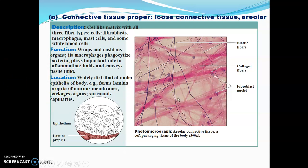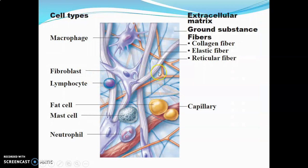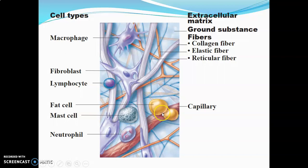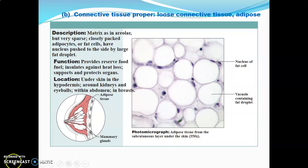Areolar connective tissue is found in four key areas: the lamina propria of mucous membranes, as packaging around organs, and surrounding capillaries. Under the microscope, you can see collagen fibers, elastic fibers, and thin reticular fibers. Cell types visible include macrophages, fibroblasts — spindle-shaped with a flattened nucleus — mast cells with cytoplasmic granules, fat cells with the nucleus pushed to the edge, and blood cells.